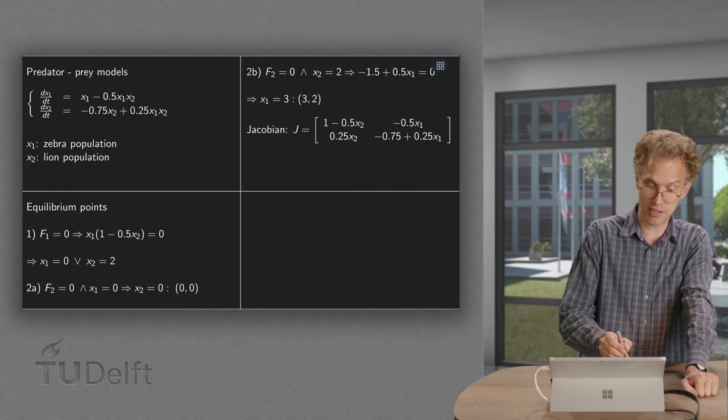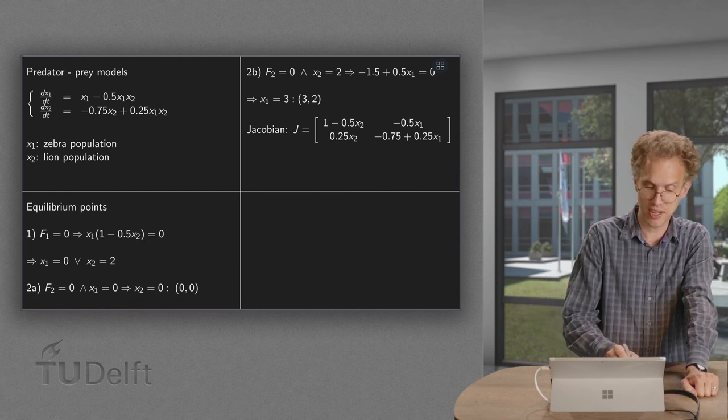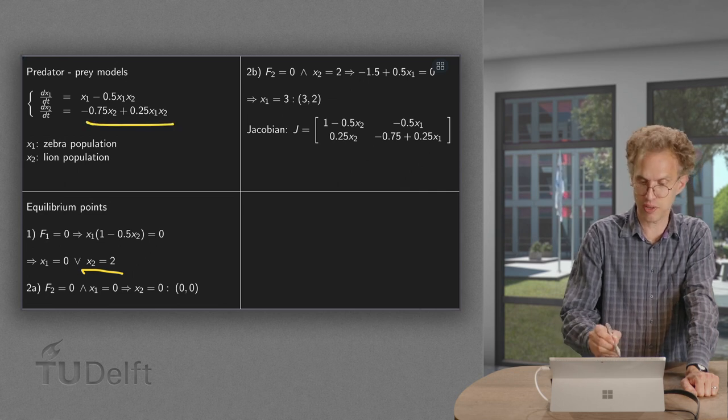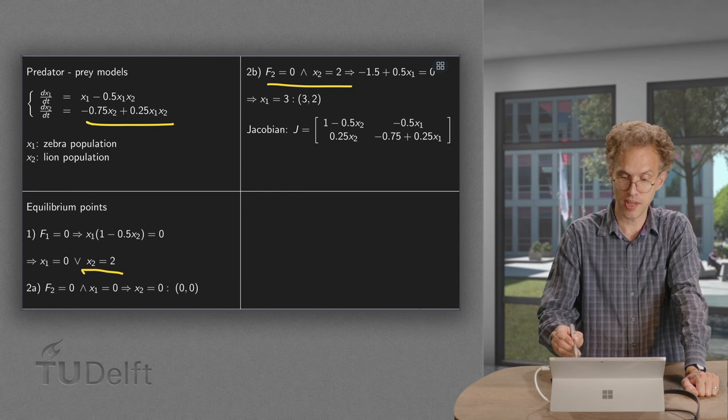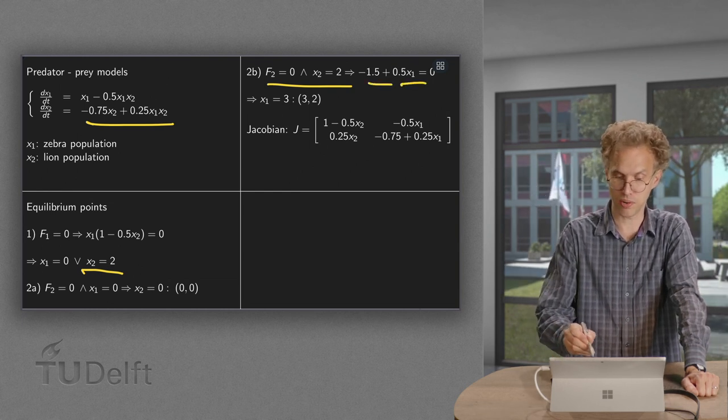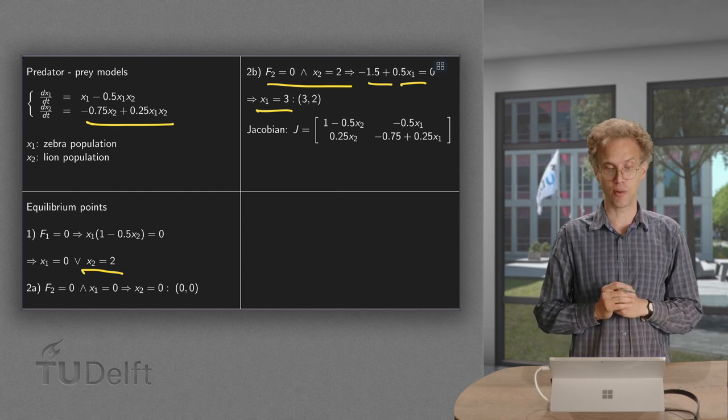And the second possibility, fortunately we have another possibility, x2 equals 2. And then setting f2 equals 0 and x2 equals 2, both of them. And then we get minus 1.5 plus 1.5 x1 equals 0, so x1 equals 3. And we have the point (3, 2).